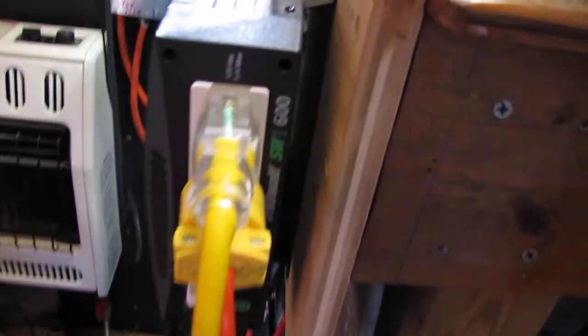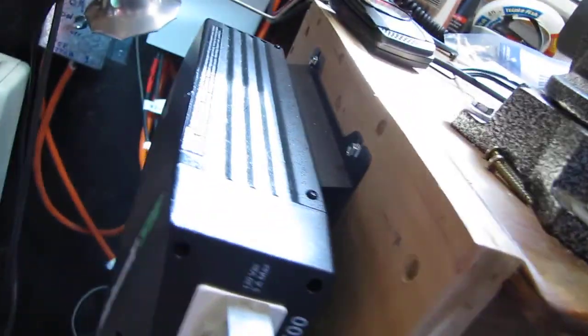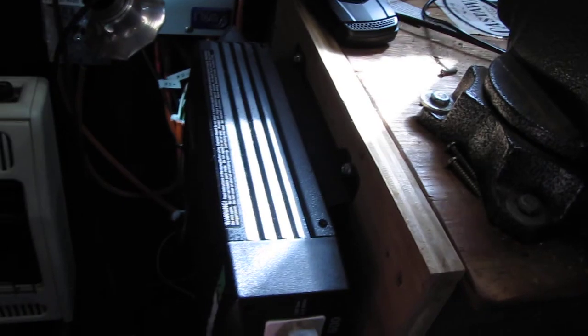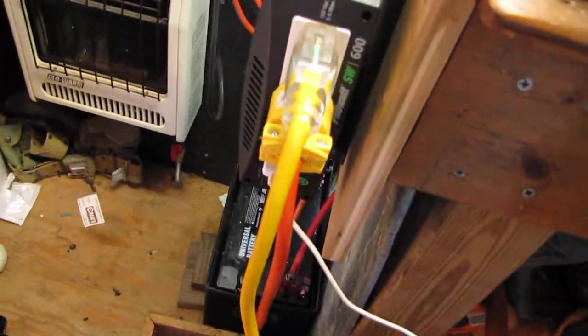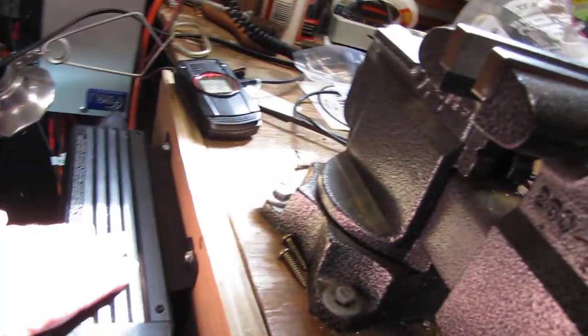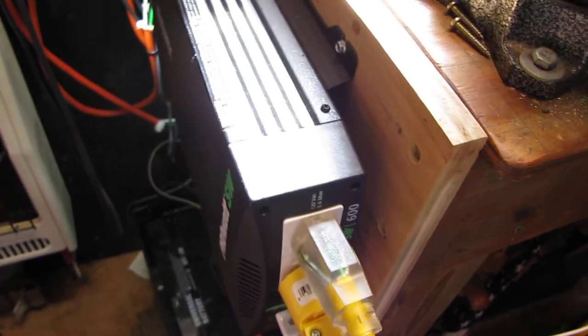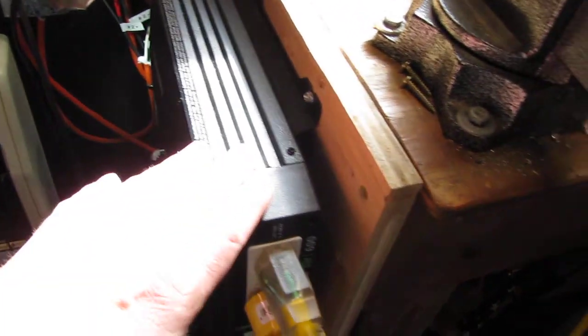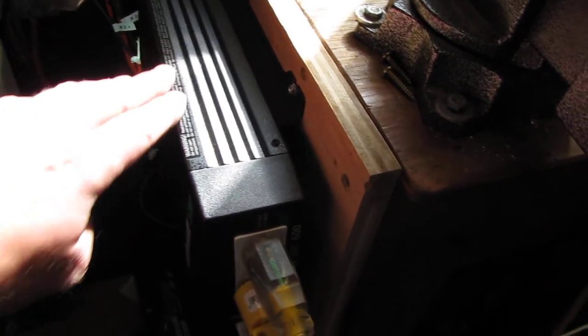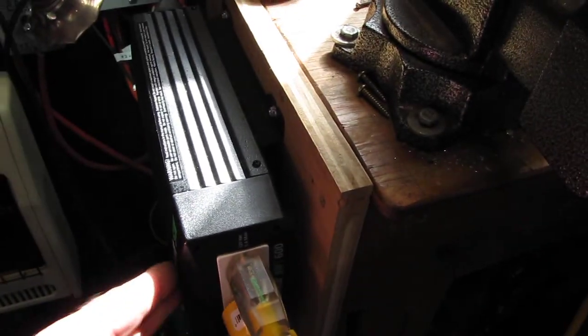This is a Pro Watt SW 600 sine wave inverter. A sine wave puts out cleaner electricity where you can run TVs, computers, refrigerators, that kind of stuff, and won't damage anything. A lot of stuff now is kind of high tech, so you don't want to use modified sine wave. You want to use sine wave - it's better on your equipment, plus they use less power.